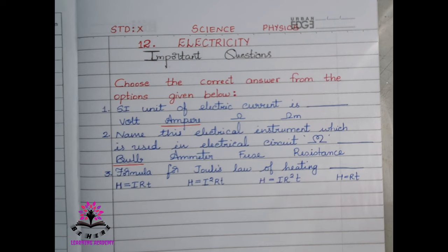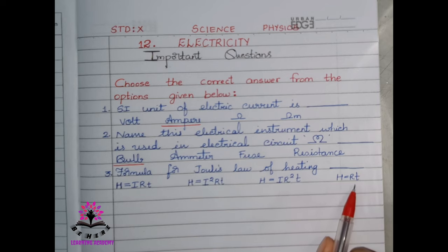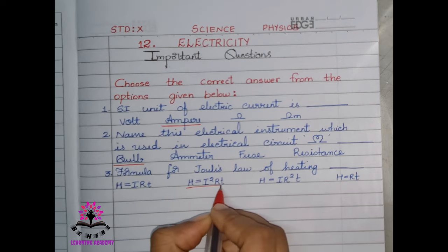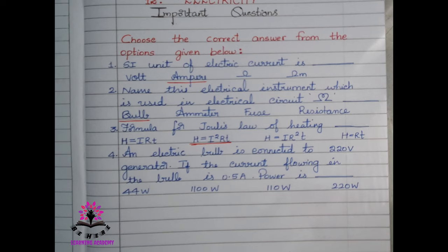Formula for Joule's law of heating — there are different options: H = IRT, H = I²RT, H = IR²T, and H = RT. The right option is option number two: H = I²RT.